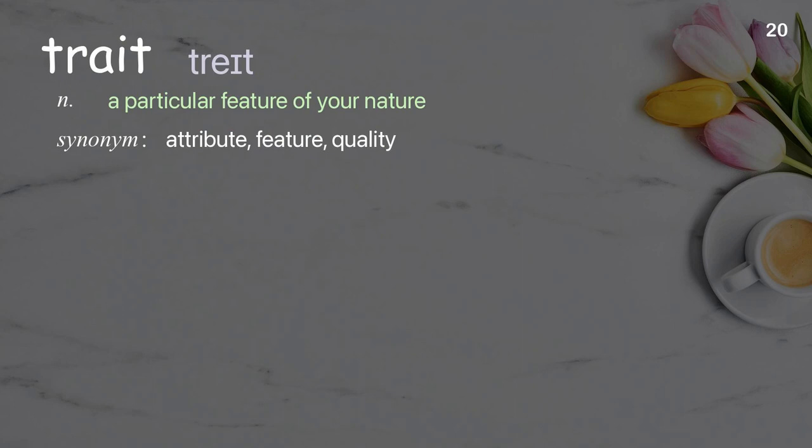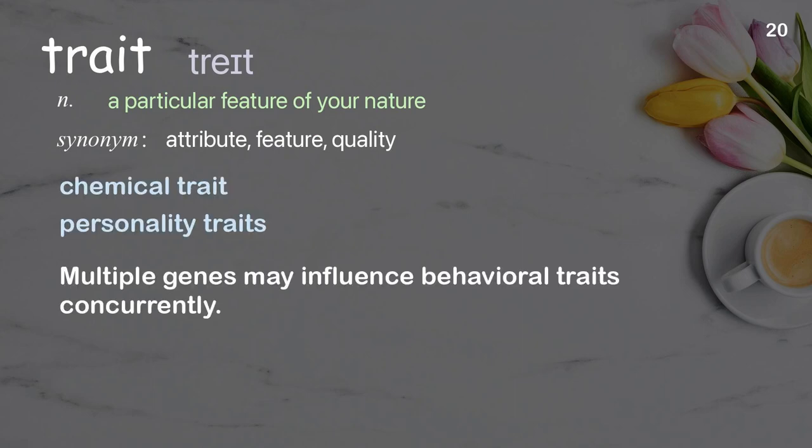Trait: a particular feature of your nature. Examples: chemical trait, personality traits. Multiple genes may influence behavioral traits concurrently.